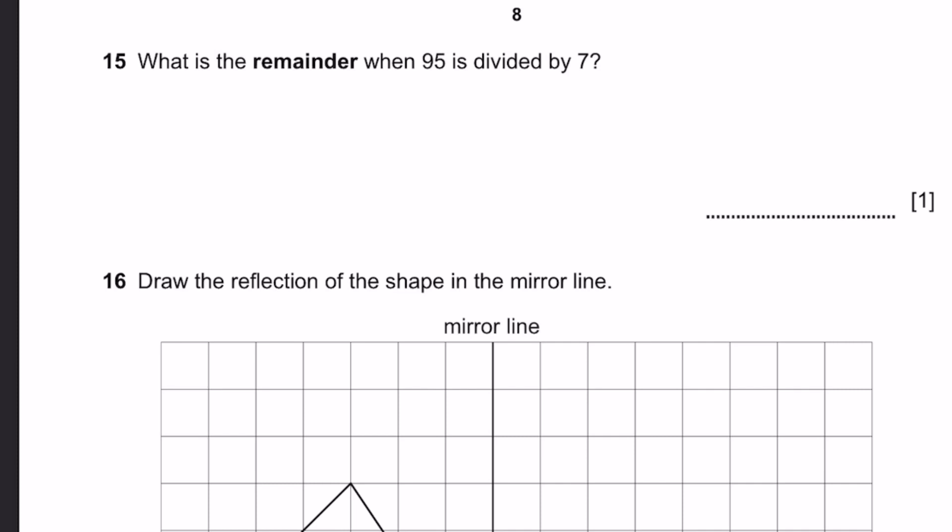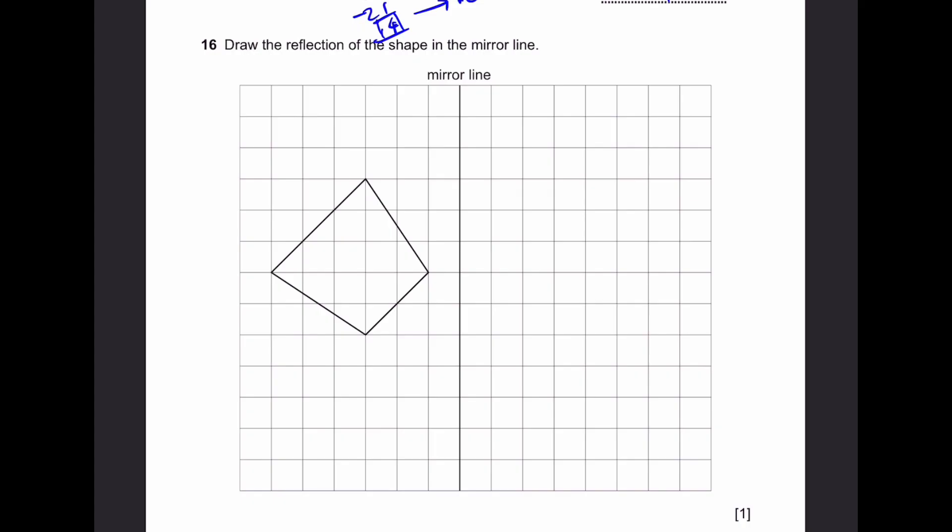Question 15. What's the remainder when 95 is divided by 7? That's 95 divided by 7. We have 1 here, minus 7, we get 25. Then we have 3 here, minus 21, we get 4. So the remainder is 4.